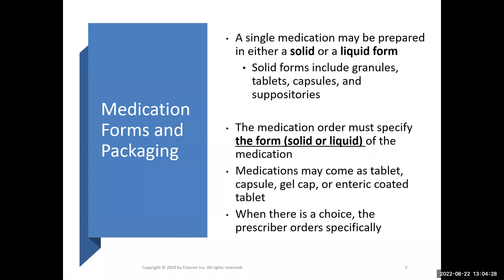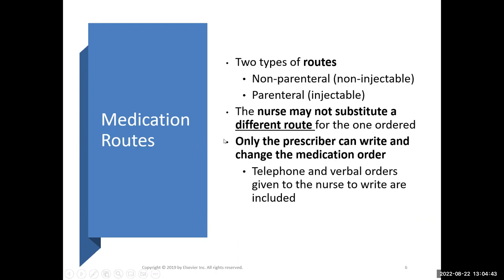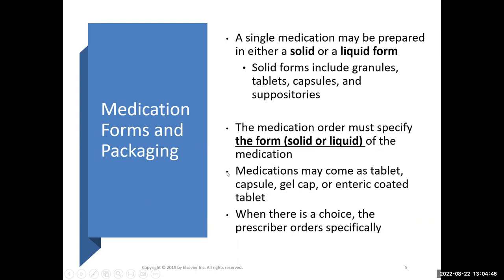A single medication can be prepared in solid or liquid form. Solid forms are granules, tablets, capsules, and suppositories. Liquids would be an elixir such as cough medicine. It could also be a parenteral drug that we're going to use a syringe to inject — given IV, subcutaneous, intradermal, or intramuscular.